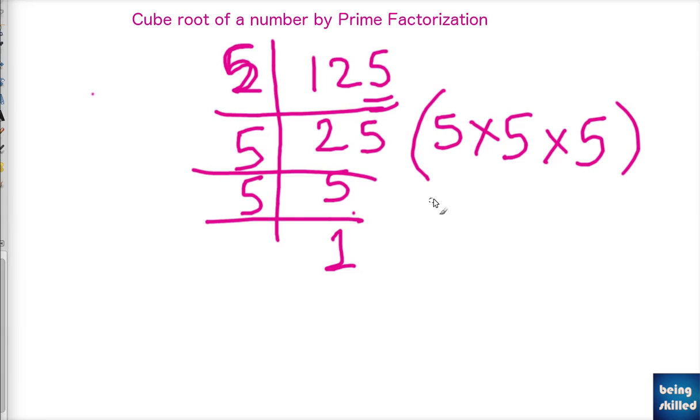So whenever you are calculating cube root, then you should know that the factors should be in the group of 3. So we have 5 three times.